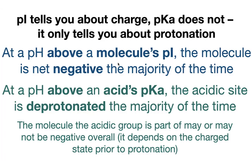When we talk about the charge of the molecule overall, that's the pI. If you're at a pH above the pI, you're going to be negative most of the time — that's the net charge of the whole molecule. If you're at a pH above an acid's pKa, that site is going to be deprotonated the majority of the time. So we're talking about site with the pKa versus talking about charge with the pI. Looking at the site does not tell us about the actual charge.